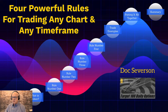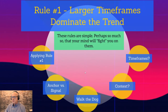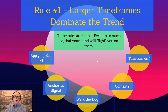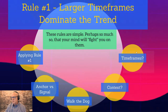So that is what's broken. We're going to start with rule number one. These are the four powerful rules. Rule number one: larger timeframes dominate the trend. These rules are relatively simple — so simple your mind will fight them because it's got to be tougher than this. We'll start with timeframes.